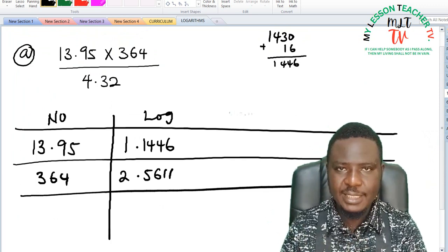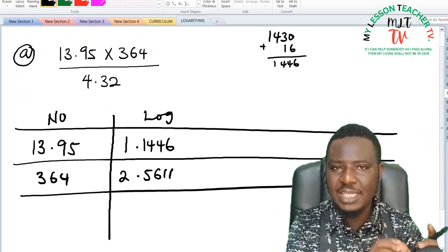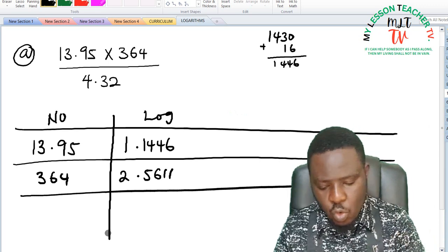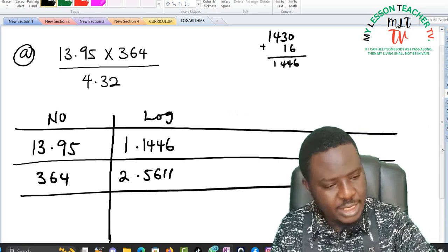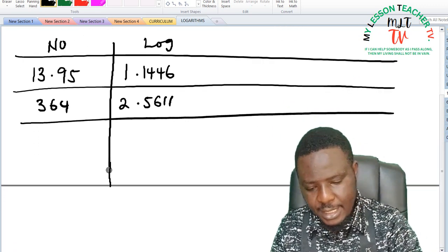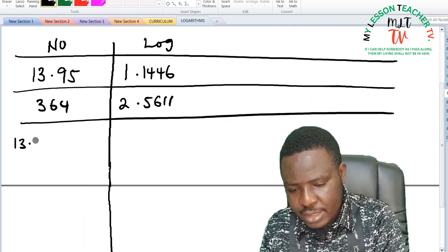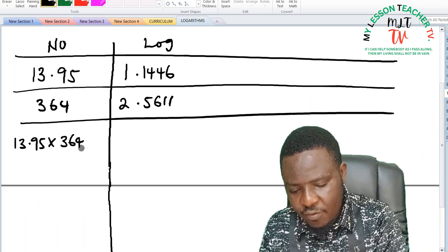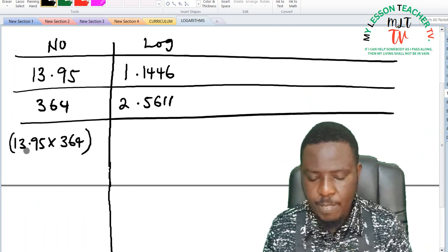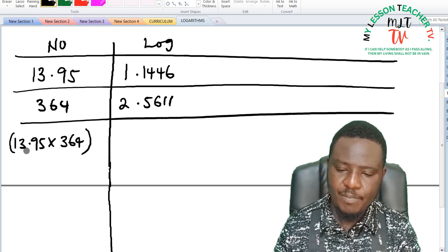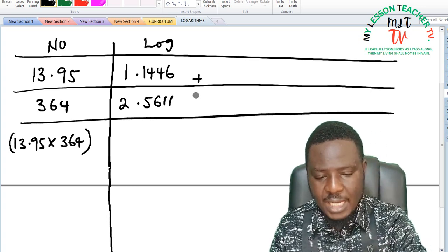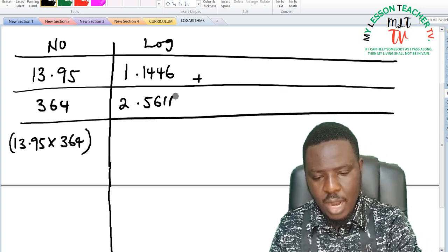And in logarithm, multiplication in indices is equivalent to addition in logarithm. So while the question is saying 13.95 times 364, this is the numerator.